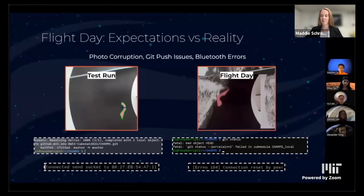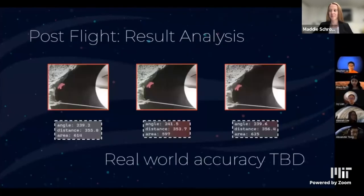Although we tested our system plenty, there were still unforeseen errors on flight day. However, despite photo corruption, Git issues, and Bluetooth errors, we were still able to gather good images and data. Here you can see three images of the same HAB taken on different orbits — they look pretty similar and the data has slight variance.